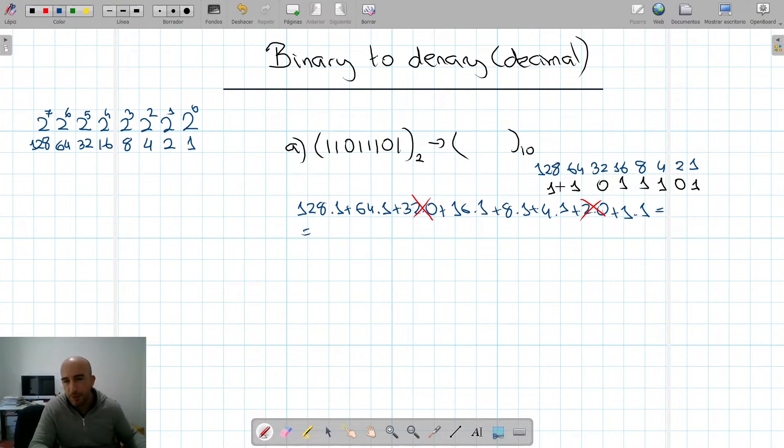So we only have to write down the positions, the value of the positions where you have a 1. So if I were given this number, I would really have done, there's a 1 in position 128, so 128 plus 64, that has another 1, 32 we ignore it, 16, 8, and 4. And we only have to do this addition, which is 221.